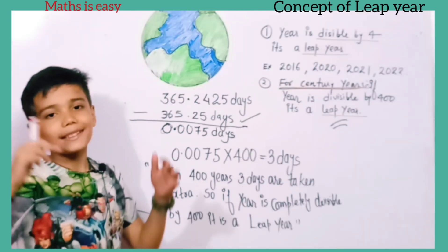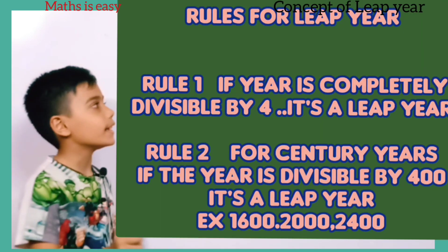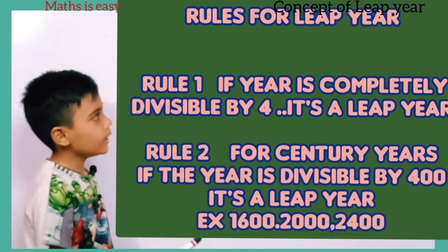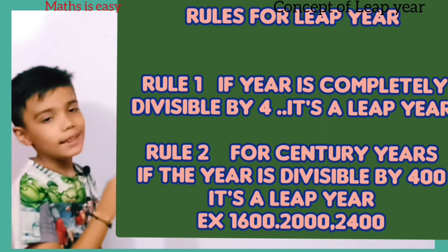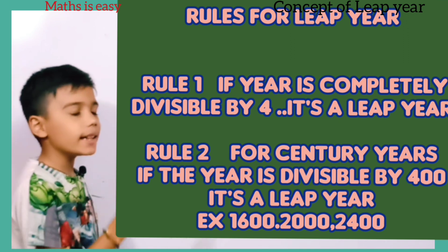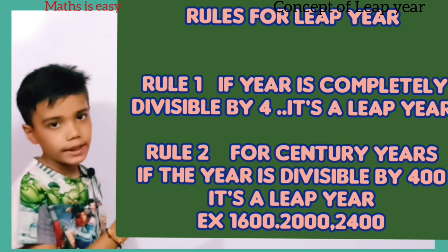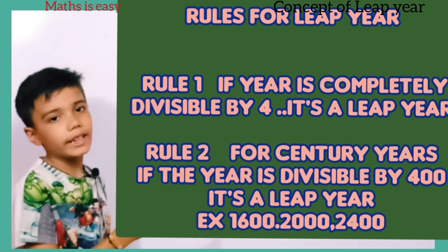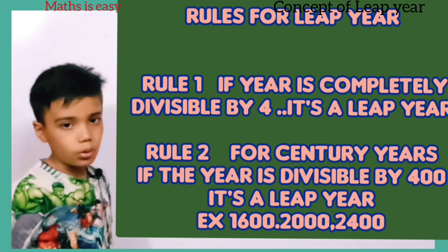Now let's conclude. Rule 1: if a year is divisible by 4, it is a leap year. For example, 2016 and 2020.